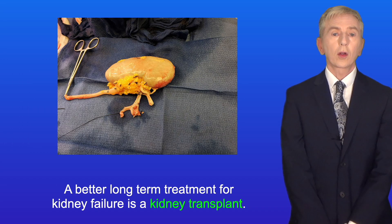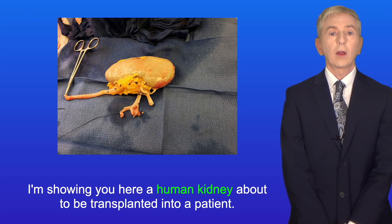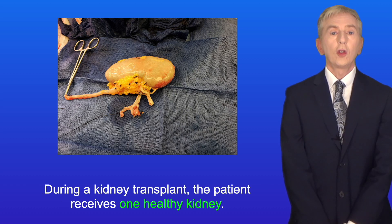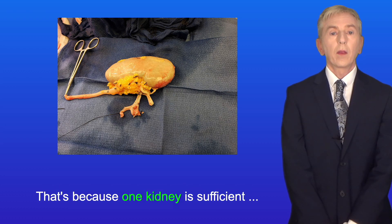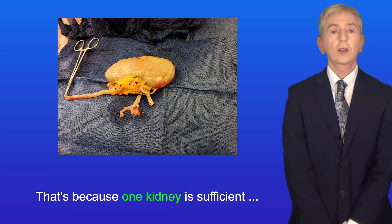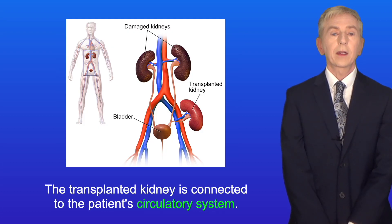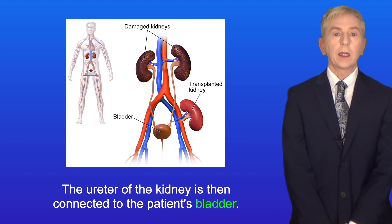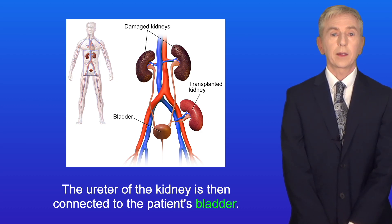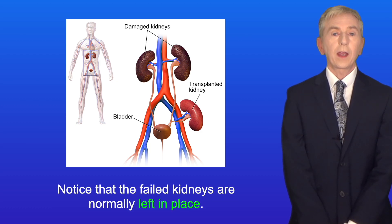A better long-term treatment for kidney failure is a kidney transplant. I'm showing here a human kidney about to be transplanted into a patient. During a kidney transplant the patient receives one healthy kidney, because one kidney is sufficient to carry out the functions needed by the patient. The transplanted kidney is connected to the patient's circulatory system. The ureter of the kidney is then connected to the patient's bladder, and notice that the failed kidneys are normally left in place.